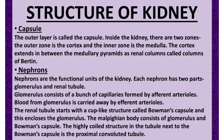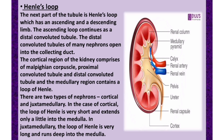The renal tubule starts with a cup-like structure called the Bowman's capsule, which encloses the glomerulus. Together, the glomerulus and Bowman's capsule form the Malpighian body. The highly coiled structure next to the Bowman's capsule is the proximal convoluted tubule. The next part is Henle's loop, which has an ascending and a descending limb.